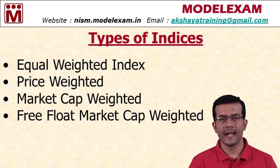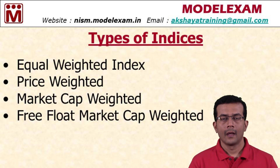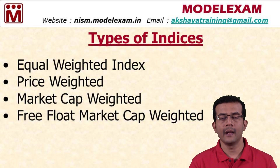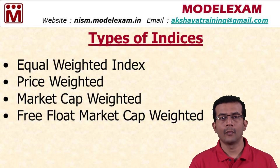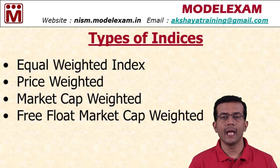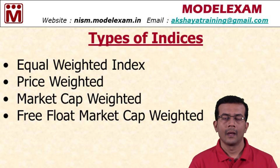There are various types of indices, and there have been various methods by which these indices are formed, structured, and maintained. We will see them one by one. The first method is called the equal weighted index.